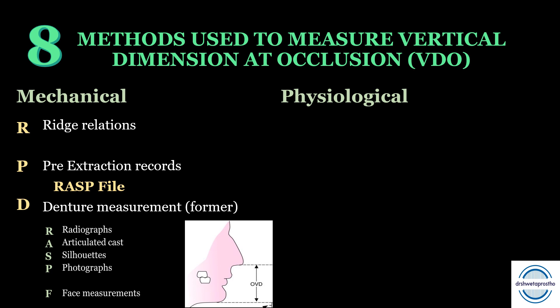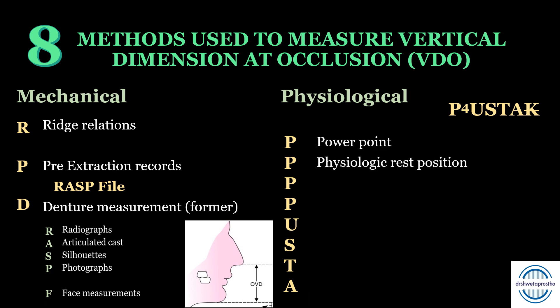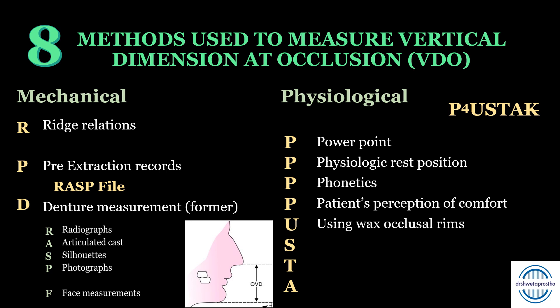For the physiological methods of measuring VDO, the mnemonic is PUSTAK with K silent and four Ps. The four Ps are: first P for power point, second P for physiological rest position, third P for phonetics, fourth P for patient's perception of comfort. Then U for using wax occlusal rims, S for swallowing threshold, T for tactile sense and perception, and A for aesthetics.